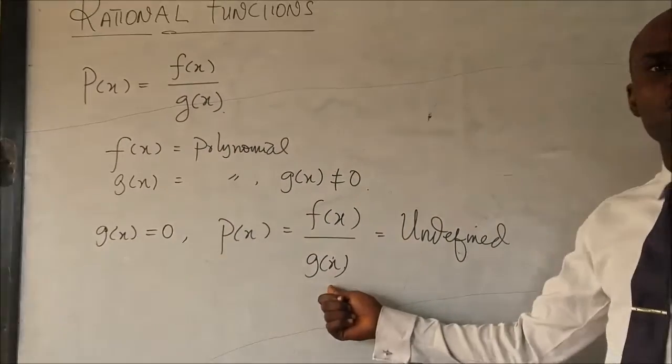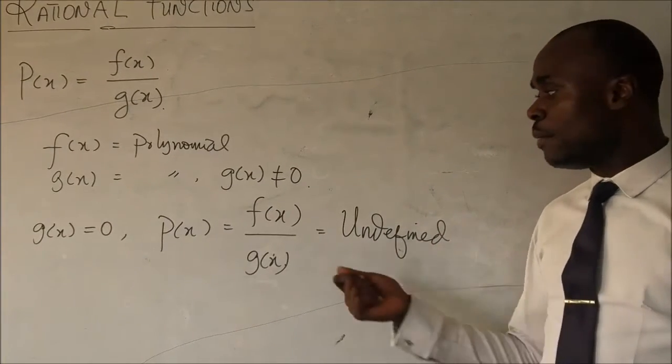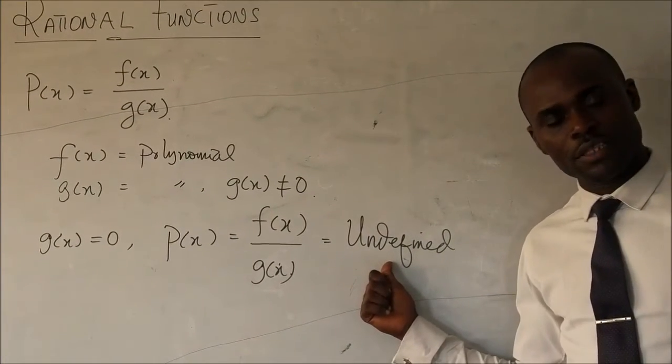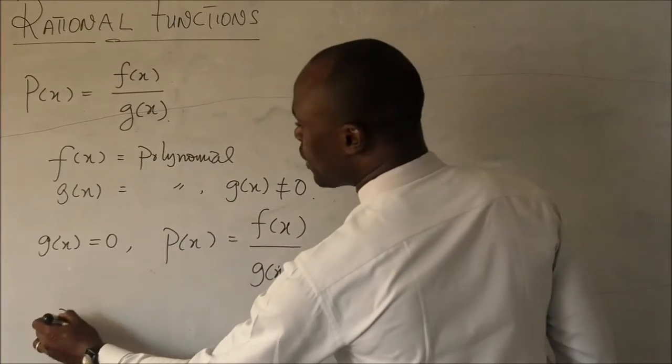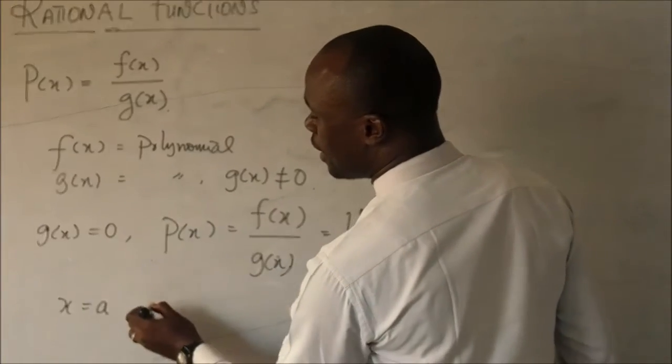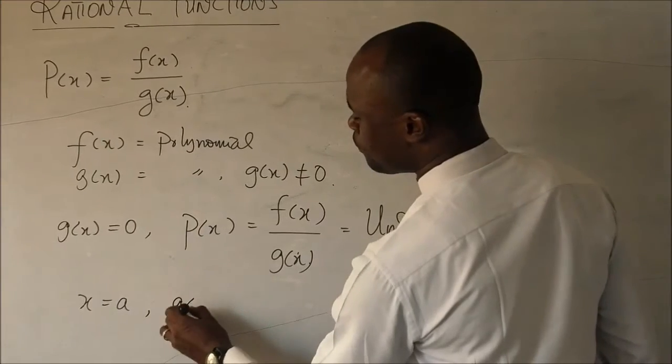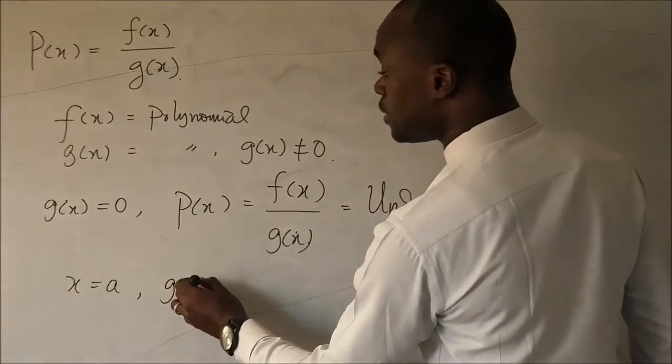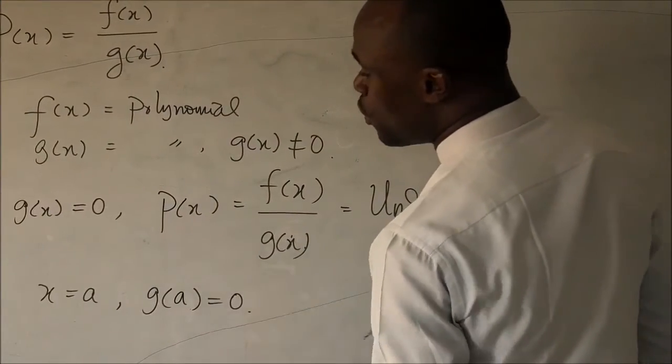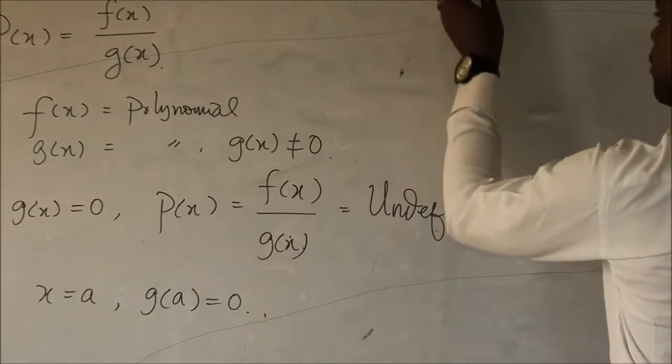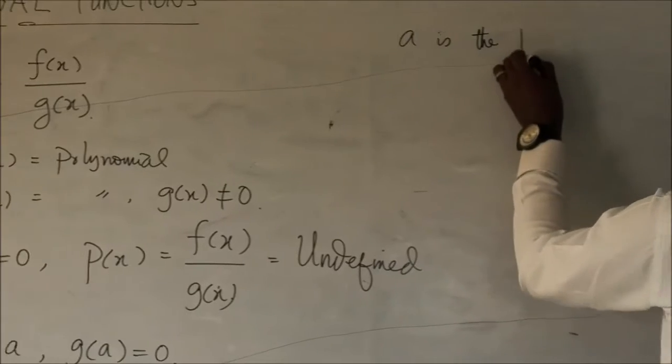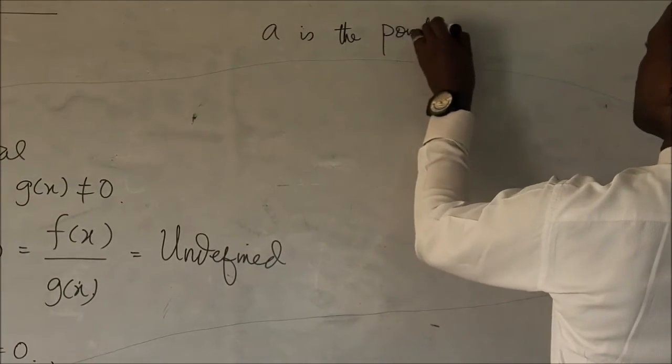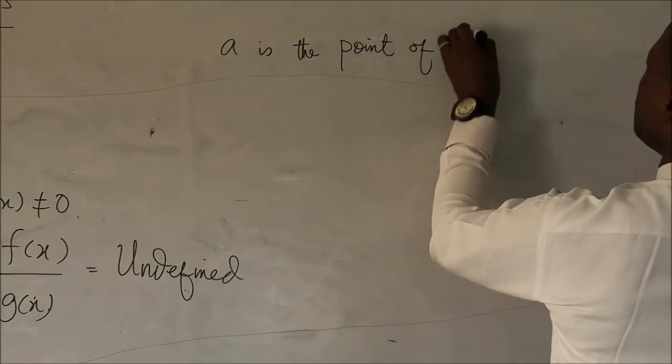Now the question is, there is a particular value that makes this undefined. And that is the value of x. So here we put x as a and it substitutes in g of x and it gives you zero. We say that a, in mathematics we say that a is the point of discontinuity.